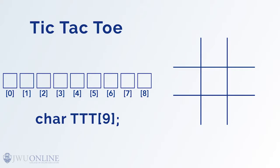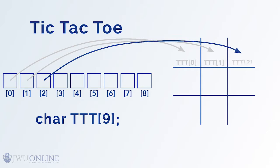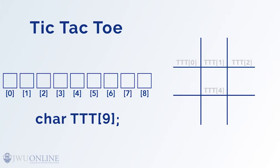So the upper left box on the board is ttt sub 0. The upper middle is ttt sub 1. The upper right is ttt sub 2. And the middle square is ttt sub 4. All the way up to the lower right, ttt sub 8. Now remember, there is no ttt sub 9 because we started at ttt sub 0.